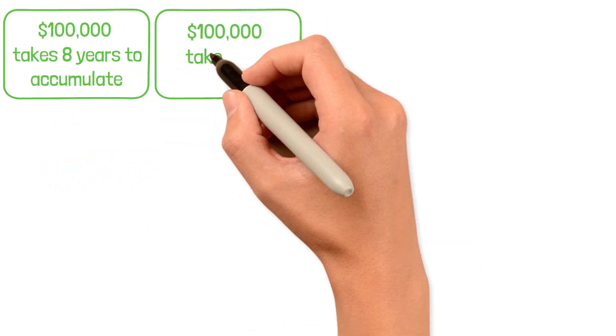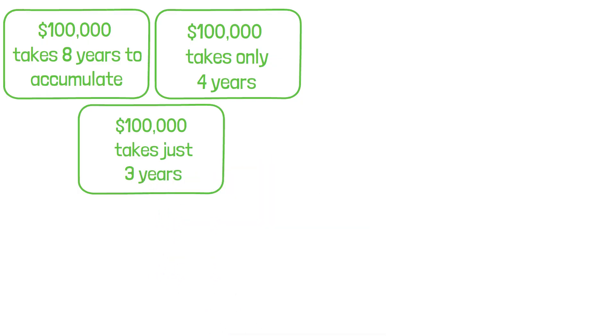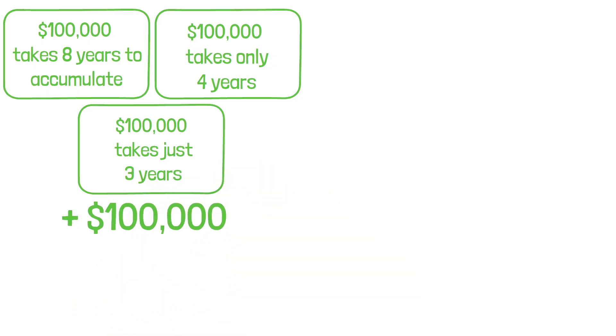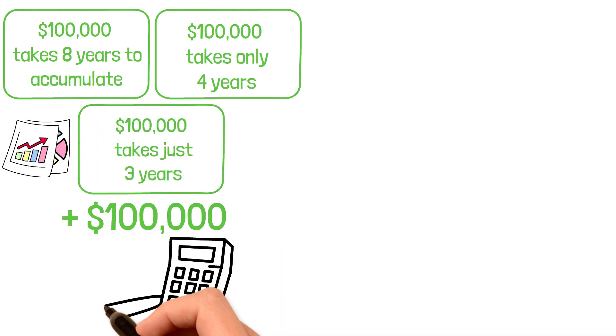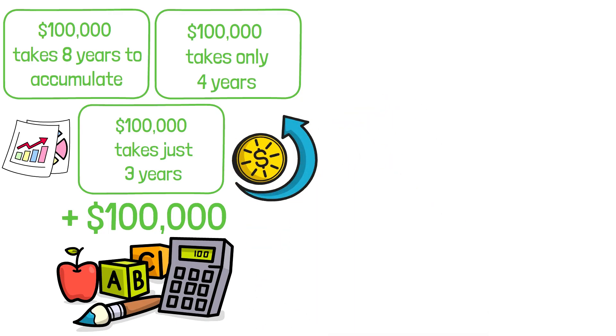Your second $100,000 takes only 4 years, your third $100,000 takes just 3 years. After that, each additional $100,000 comes faster and faster. This isn't magic or market timing. This is pure mathematics, the inevitable result of compound interest working on an increasingly large base of capital.